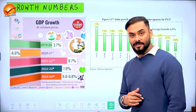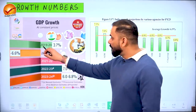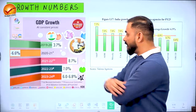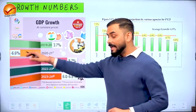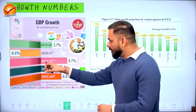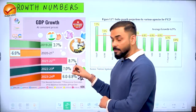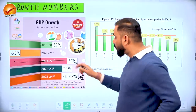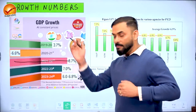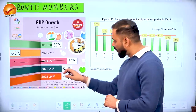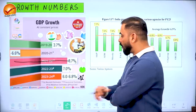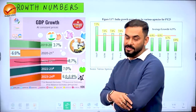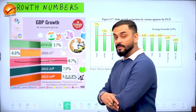Looking at GDP growth numbers: in 2019-20 it was 3.7%; in 2020-21 (COVID time) it was minus 6.6%; in 2021-22 it bounced back to 8.7% — boosted by base effect since we started from negative 6.6%. In 2022-23, growth is 7%. The expectation for 2023-24 is 6 to 6.8% growth.